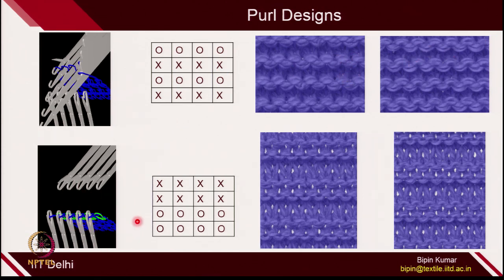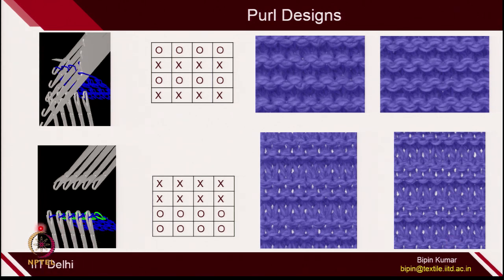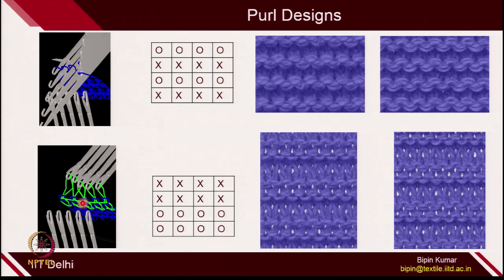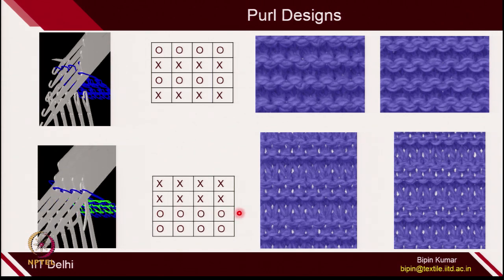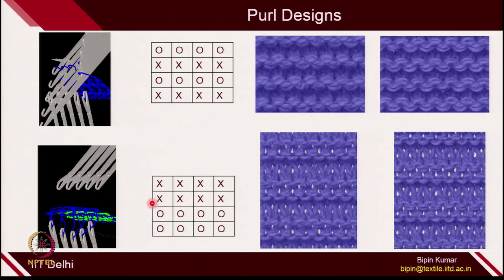Now let's look at 2×2 pearl. Here 2 technical back courses followed by 2 technical front courses. If you see the animation, first it gets transferred to the back bed. The back bed makes the first course, then the second course. Then the back bed transfers loops to the front bed. The front bed makes the third course, then the fourth course. This is how pearl design is created on the machine.